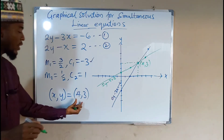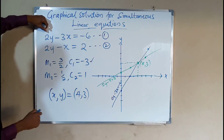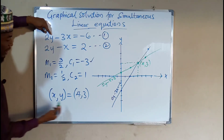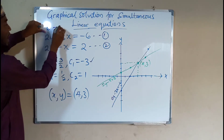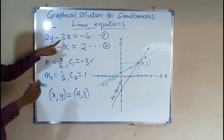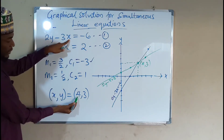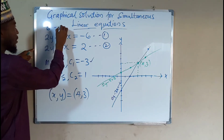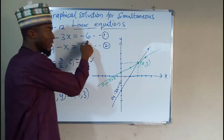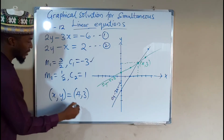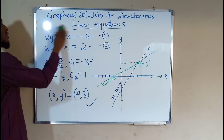To verify, you can substitute these values into the original equations. You can see that 2 times y — meaning 2 times 3 — is 6, minus 3 times x — meaning 3 times 4 — is 12. So 6 minus 12 is negative 6. Hence, we say this is the real solution for this simultaneous linear equation.